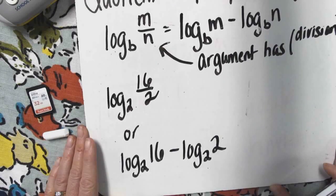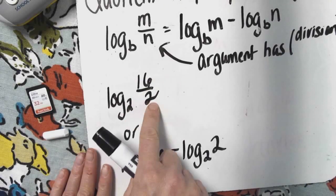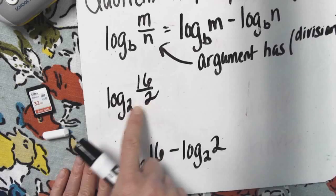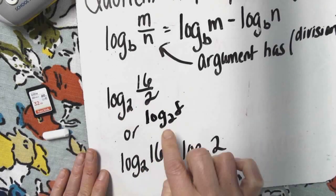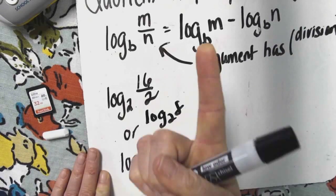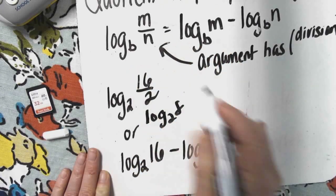Let's see how that works. So you have log base 2 of 16 divided by 2. Well, 16 divided by 2 is 8. So log base 2 of 8. How many twos does it take multiplying together to get 8? 2 times 2 is 4 times 2 is 8. It took 3 of them.